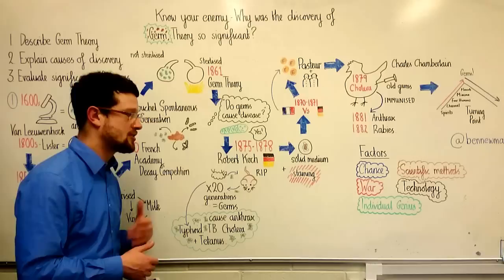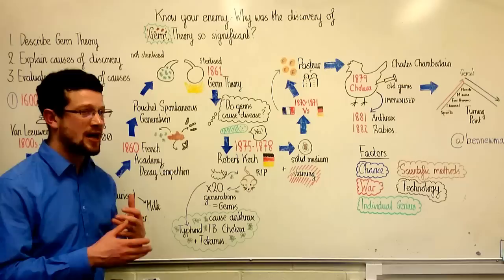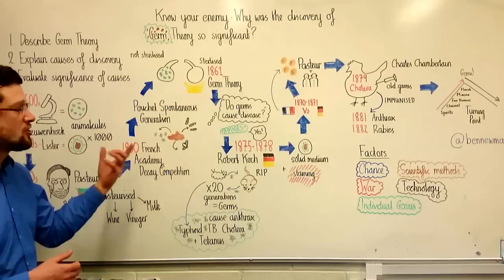Definitively, making this link fell to another scientist, a German called Robert Koch. Now, between 1875 and 1878, Robert Koch devised a series of careful experiments to prove that it was the anthrax germ which was killing sheep.